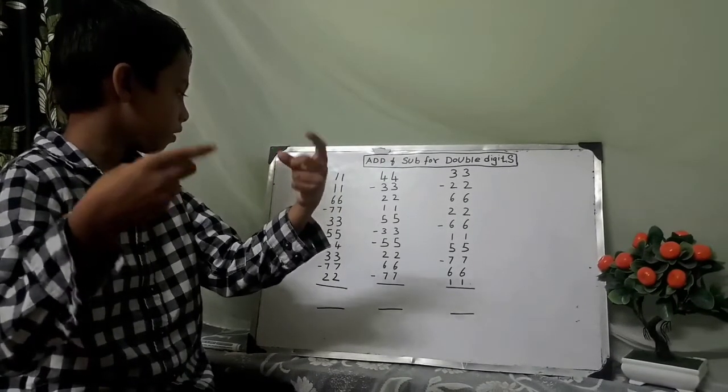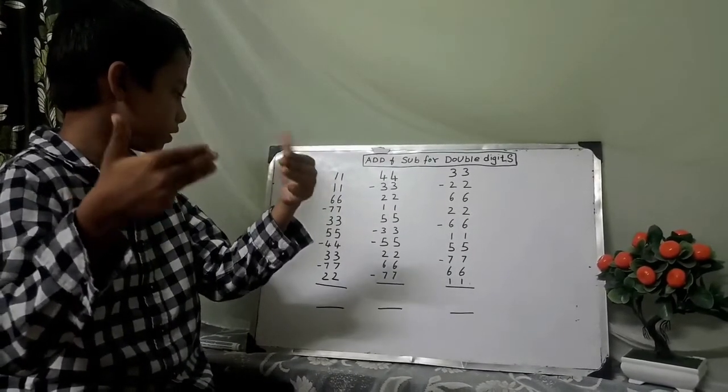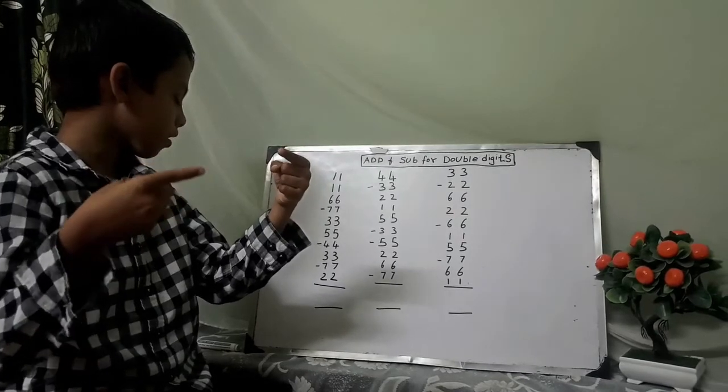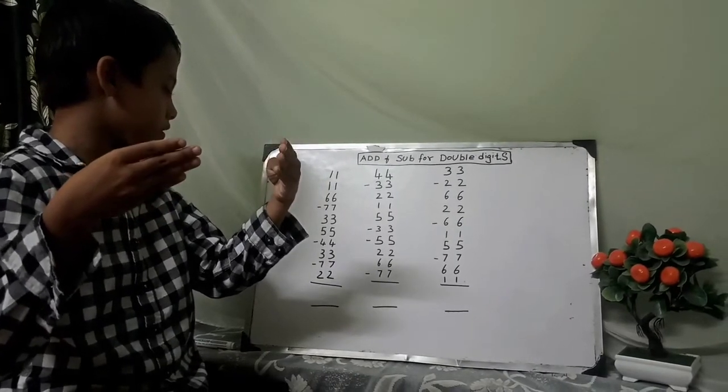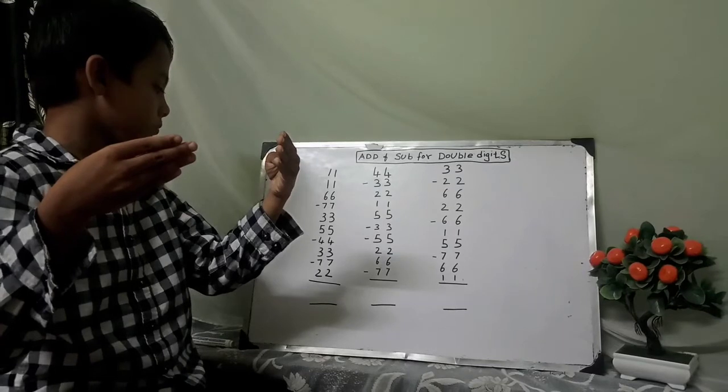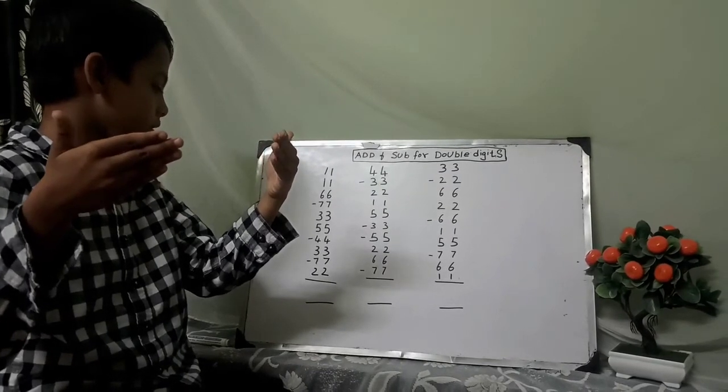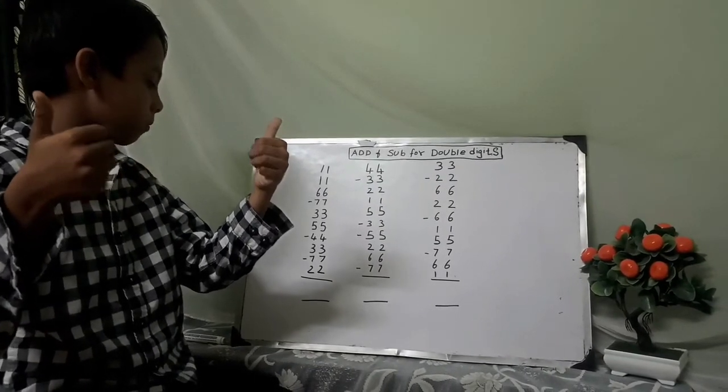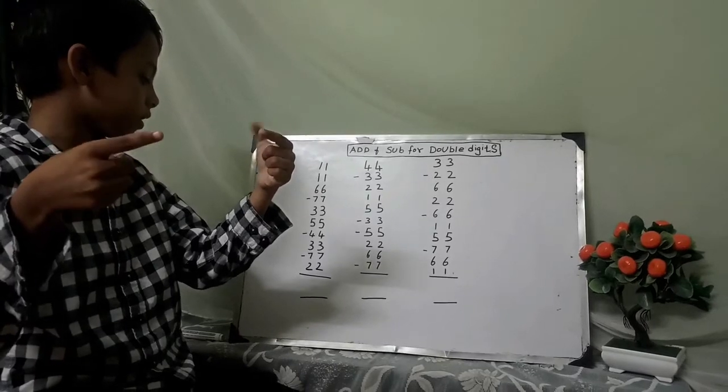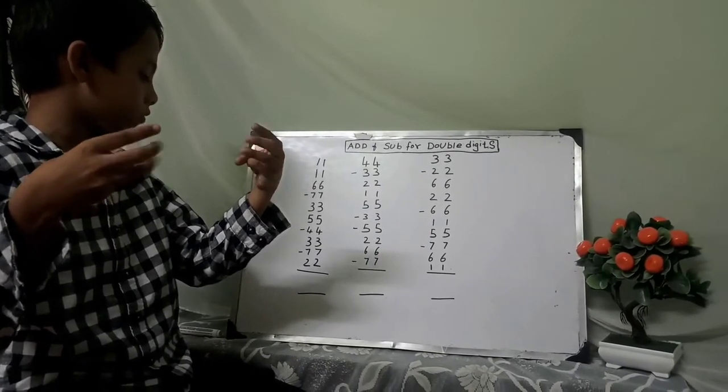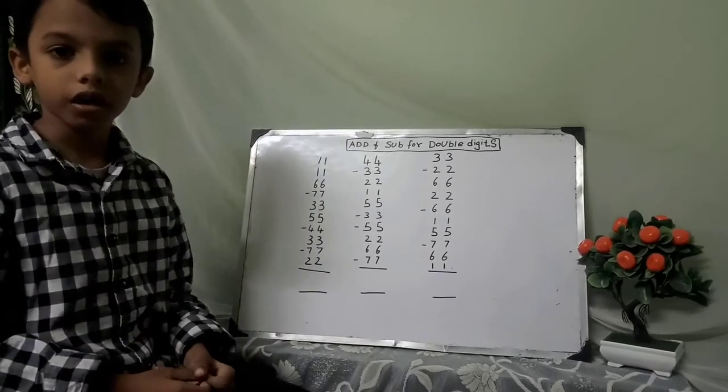Eleven, eleven, six, minus seven, minus seven, plus seven, plus thirty-three, plus fifty-five, minus forty-four, plus thirty-three, minus seventy-seven, plus twenty-two. The answer is thirty-three.